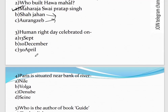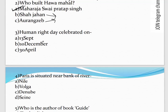Question number 3: Human Rights Day is celebrated on which date? The options are 13 September, 10 December, and 30 April. The correct answer is 10 December — we celebrate Human Rights Day on 10 December. You should also know when Haemophilia Day is celebrated.